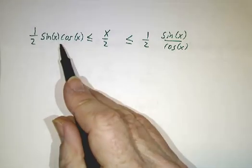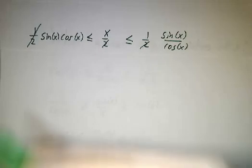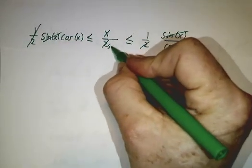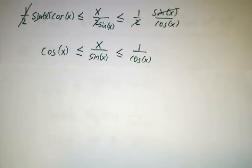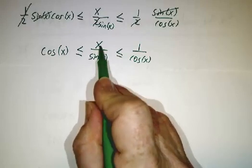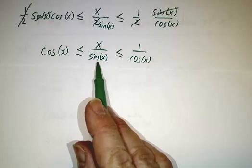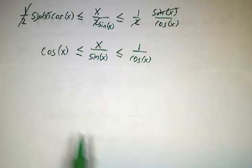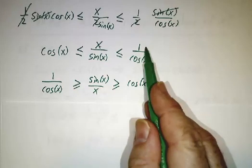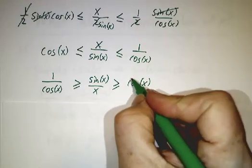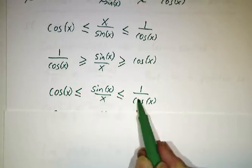Now we're going to multiply through by 2 and divide all three parts by sin(x). Rewriting, we get this inequality. This is almost what we want, except we have x/sin(x) rather than sin(x)/x. So we take the reciprocal of all three parts. When you take a reciprocal, small becomes big and big becomes small, so the inequalities flip: 1/cos(x) ≥ sin(x)/x ≥ cos(x). Moving things over, we get cos(x) ≤ sin(x)/x ≤ 1/cos(x).